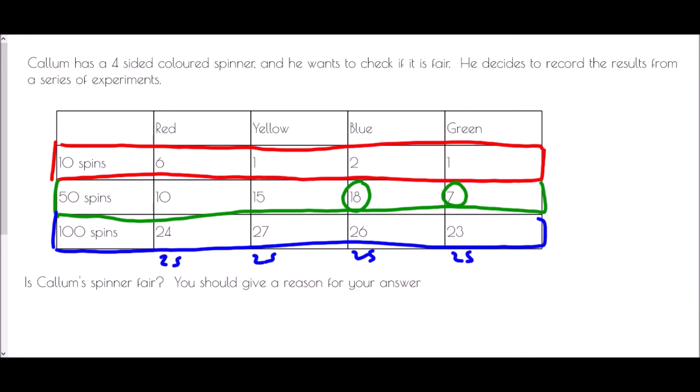And the really important thing here is the number of trials we have completed. Now if we only did 10 spins of that spinner, we couldn't really be that sure of our relative frequencies being close to the real probabilities. Because at the start, what we actually had was 6 tenths of our spins being red, only 1 tenth being yellow. But by the end, once we've done 100 spins, we had 24 out of 100. Now 24 out of 100 is around about 6 out of 25, and that is very close to exactly a quarter. A quarter would have been 25 out of 100.